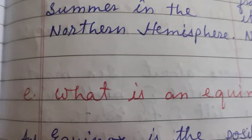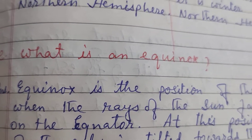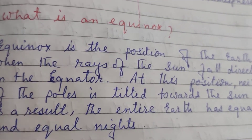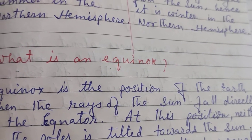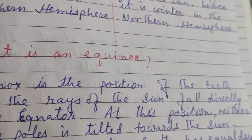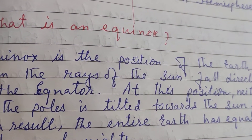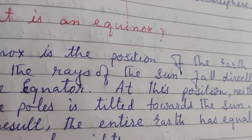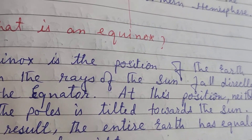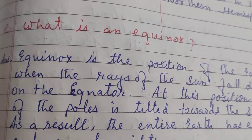What is equinox? Equinox is the position of the Earth when the rays of the Sun fall directly on the equator. At this position, neither pole is tilted towards the Sun. As a result, the entire Earth has equal days and equal nights.